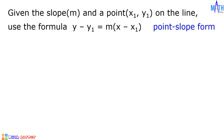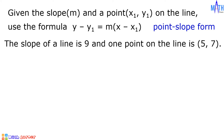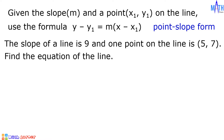Let us have some examples. Example number 1: the slope of a line is 9 and one point on the line is (5, 7). Let us find the equation of the line in standard form.